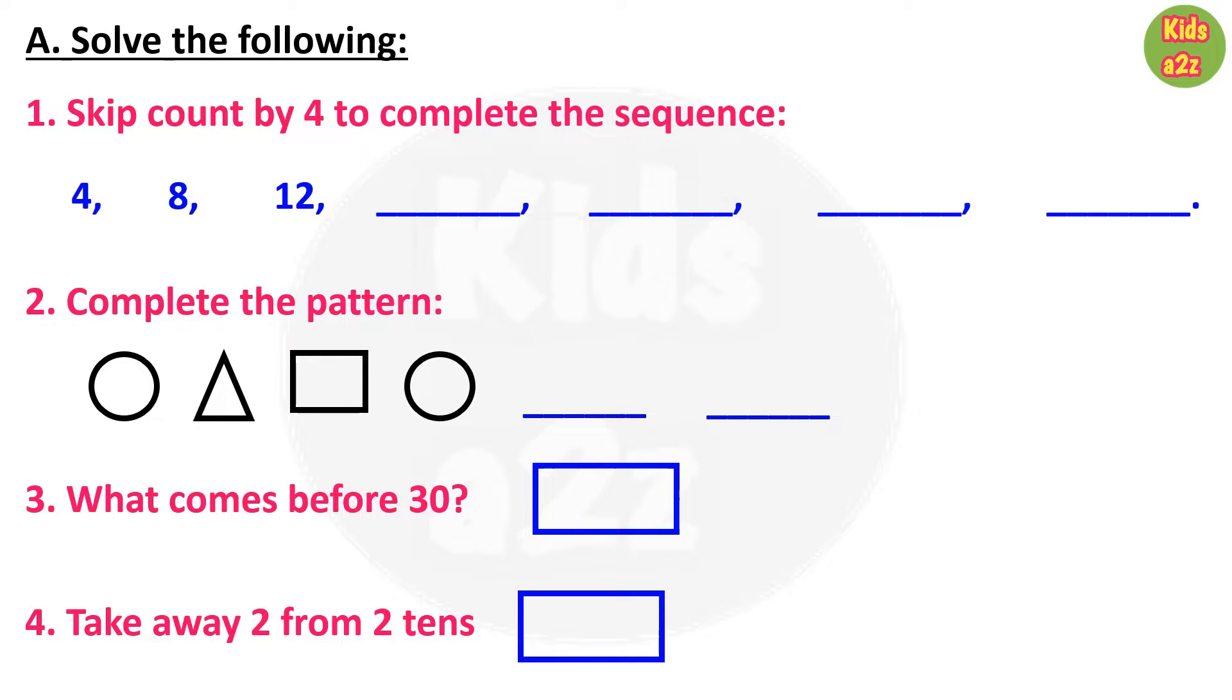So here 4, 8, and 12 are given. After 12 the next number will be 16, after that 20, then 24, and at last 28. The second question is on pattern. Here at first a circle is given.